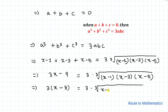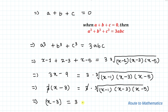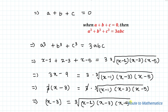After substituting and simplifying, the 3's cancel out, and we have x minus 3 equals to cube root of (x minus 1) multiplied with (x minus 3) multiplied with (x minus 5).